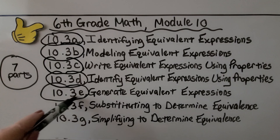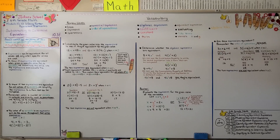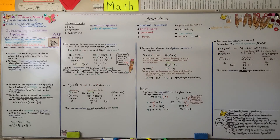So we're finished with this part. We're going to move on to the last part of 10.3: simplifying to determine equivalence. There are 7 total parts to this lesson 10.3 — they're linked in the description if you haven't watched them all. Have a really good day and I hope you'll join me next time. Bye.